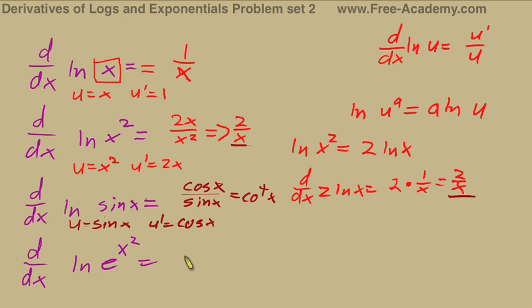So, this derivative of natural log e to the x squared, using the exponent rule, we're going to get the derivative with respect to x of x squared times the natural log of e. Recall that the natural log of e equals 1, so this is the derivative of x squared, which equals 2x.